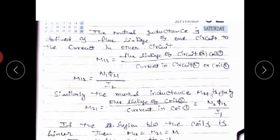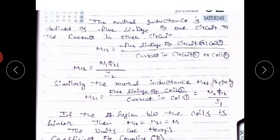Mutual inductance is defined as the flux linkages of one circuit due to current in the other circuit. In the self-inductance case, flux linkages of a circuit due to current in the same circuit is self-inductance. Mutual inductance is represented by capital M, and M12 is the mutual inductance between the first coil and the second coil, equal to flux linkages of coil 1 divided by current in coil 2.